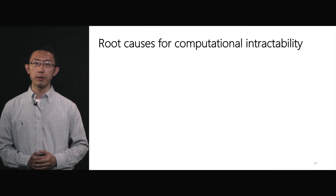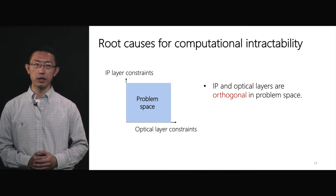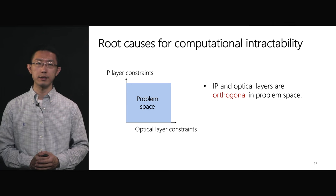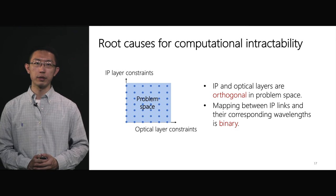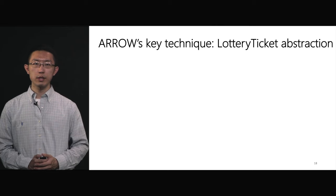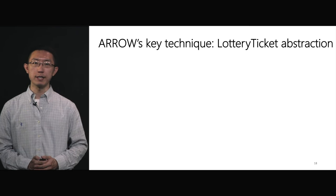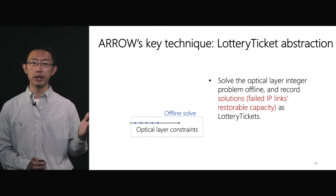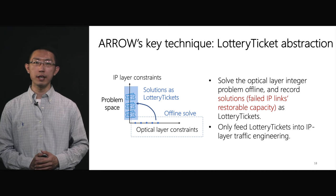The root causes for the computational intractability of the cross-layer formulation are that the IP and optical layers are orthogonal, so formulating a cross-layer problem results in a huge expansion of the problem space. Additionally, the mapping between IP links and their corresponding wavelengths is a binary decision variable, making the problem integer and NP-hard. To solve this and avoid excessive computational complexity, ARROW proposes to abstract the optical layer and only feed essential information into the IP layer. We first solve the optical layer integer problem in an offline manner and record the failed IP links' restorable capacity as lottery tickets. Then, we feed these lottery tickets into the IP layer traffic engineering to achieve a reasonable problem space.